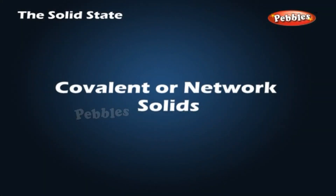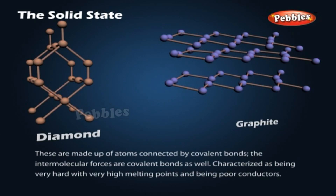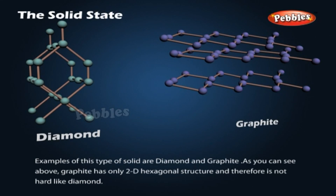Covalent or network solids. These are made up of atoms connected by covalent bonds. The intermolecular forces are covalent bonds as well, characterized as being very hard, with very high melting points, and being poor conductors. Examples of this type of solid are diamond and graphite. As shown above, graphite has only a 2D hexagonal structure and therefore is not as hard as diamond.